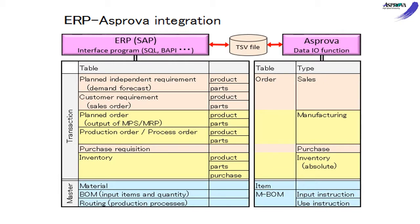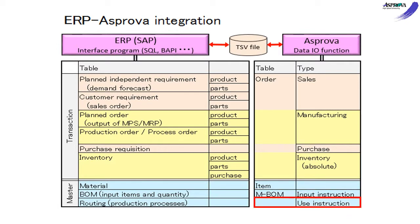There are several types of orders, such as Sales, Manufacturing, Purchase, and Inventory. There are two types of instructions in MBOM: Input and Use Instructions. Input instructions include input items and their quantities. Use instructions include the usable resource and production capacity of each process.